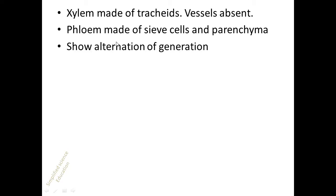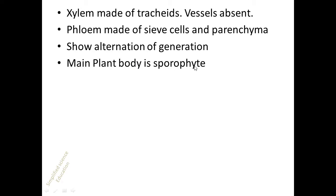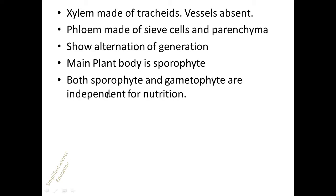As they are vascular plants, xylem is made up of tracheids — xylem vessels are absent. Phloem is made of sieve cells and parenchyma. Like all other plants, pteridophytes also show alternation of generations, but the main plant body is the sporophyte. In bryophytes, the main plant body is the gametophyte and the sporophyte is dependent on the gametophyte.